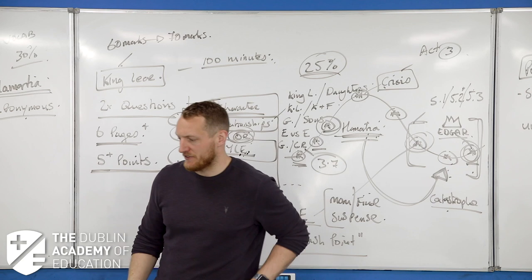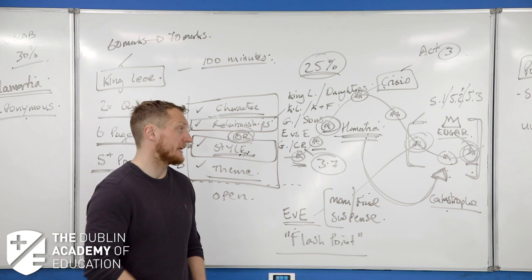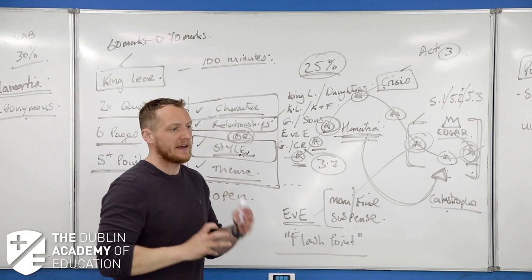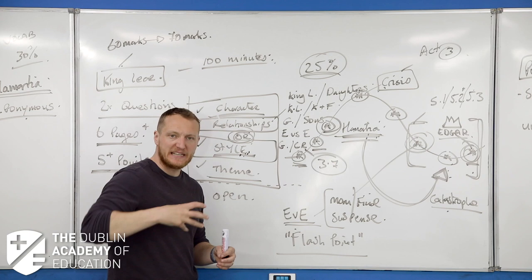It is only a glimpse of restored order because Edgar doesn't have that nous, that political nous. His arc has led him to a very different space, but he certainly is not the natural heir. We have a feeling that Britain or the kingdom will probably descend into anarchy. Remember, at the end it is described as a gored beast, hollowed out, completely gutted. Edgar has a lot to do to restore the nation.